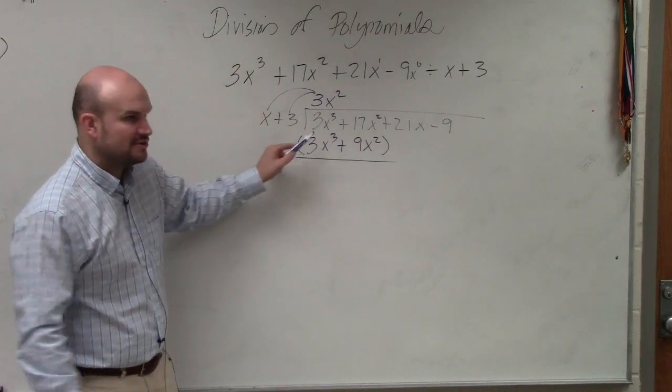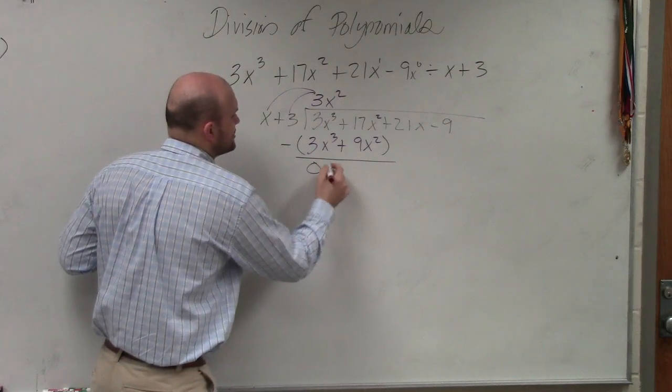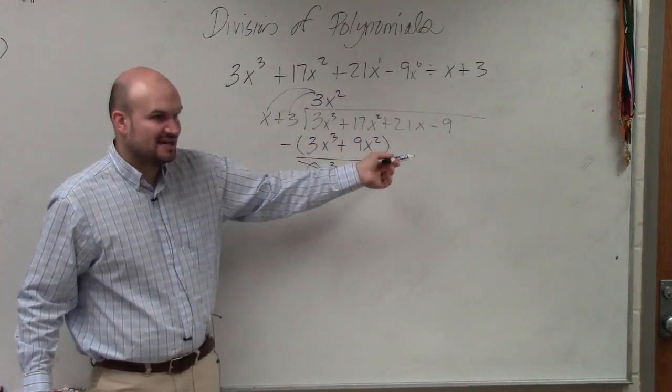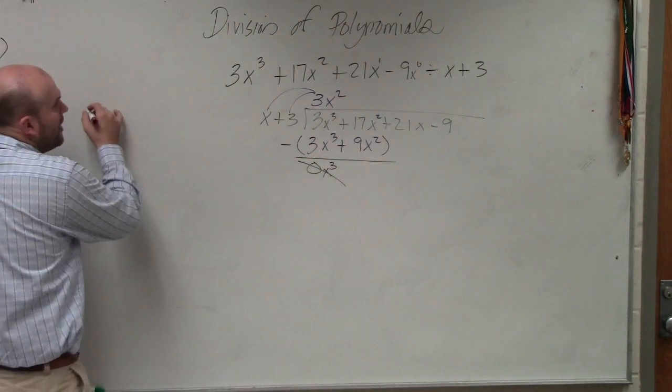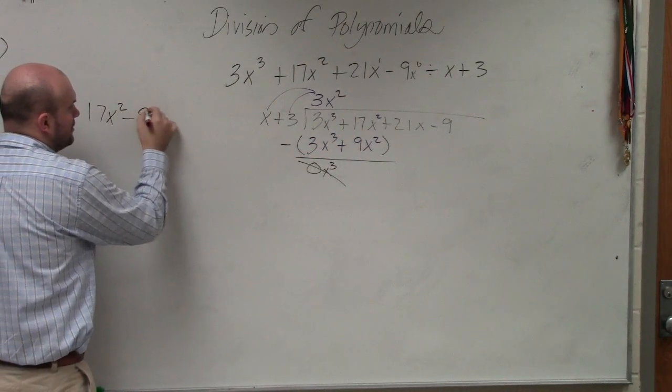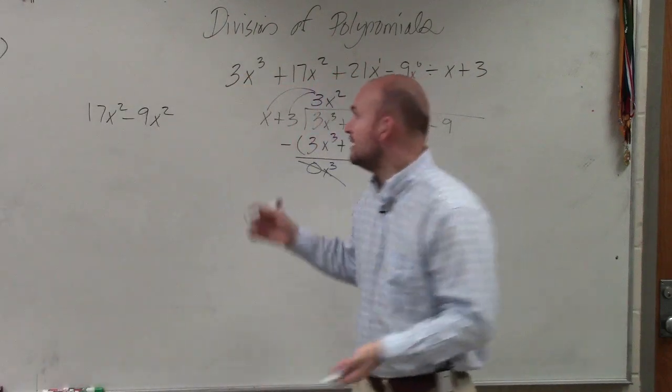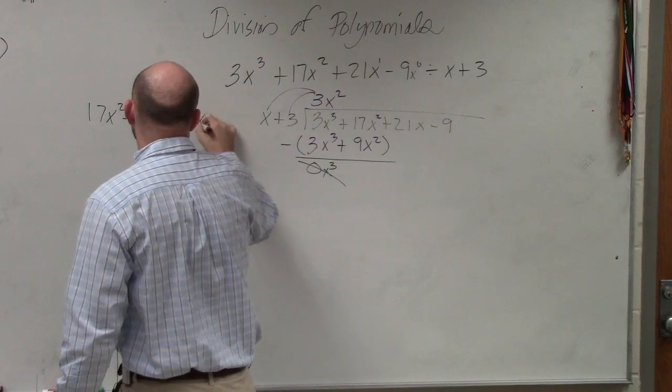3x cubed minus 3x cubed is 0x cubed, which is just 0. So 17x squared minus 9x squared. As I mentioned, write it out to the side if you have trouble. 17x squared minus 9x squared, that's just 8x squared.